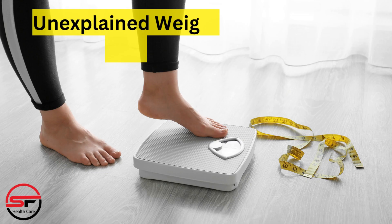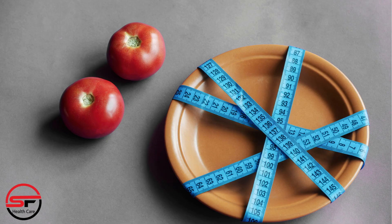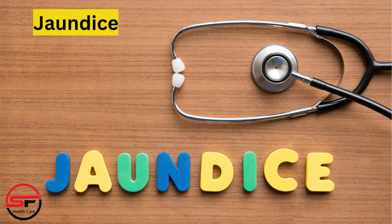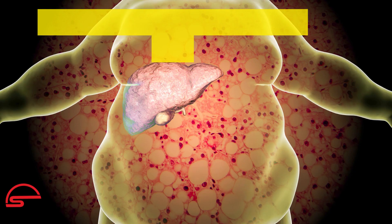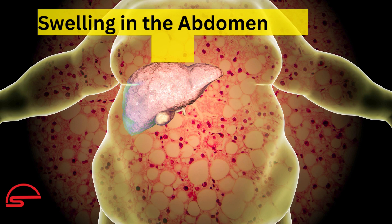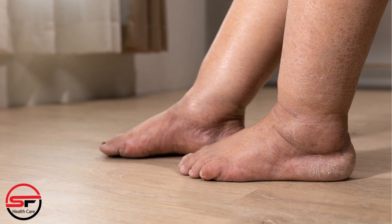Unexplained weight loss: sudden or unexplained weight loss can be a symptom of advanced fatty liver disease. The loss of appetite and changes in metabolism might contribute to weight loss. Jaundice: in more severe cases, yellowing of the skin and eyes can occur. Jaundice is a sign of liver dysfunction and can be associated with fatty liver disease. Swelling in the abdomen and legs: accumulation of fluid in the abdomen and legs can occur due to liver dysfunction, leading to noticeable swelling.